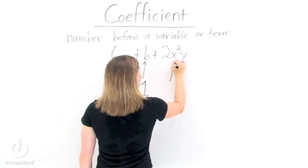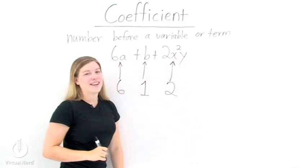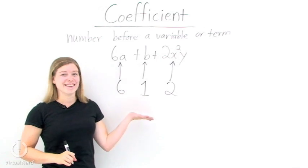And then our last term, 2x squared y, our coefficient is 2. And that is the coefficient.